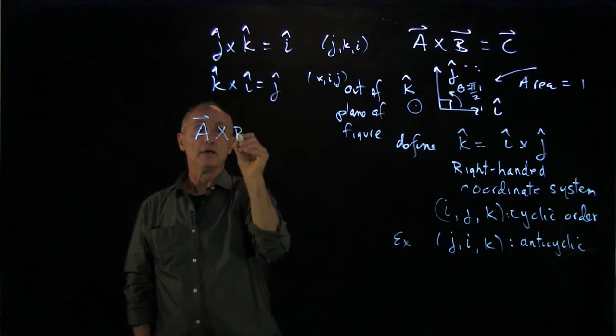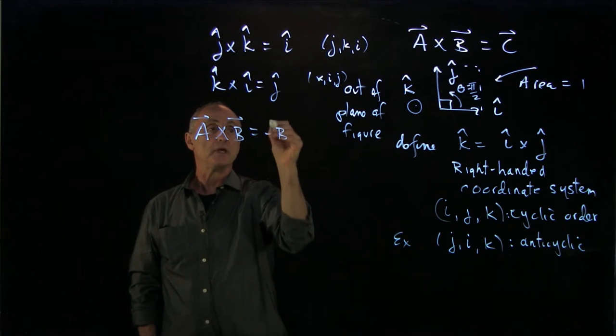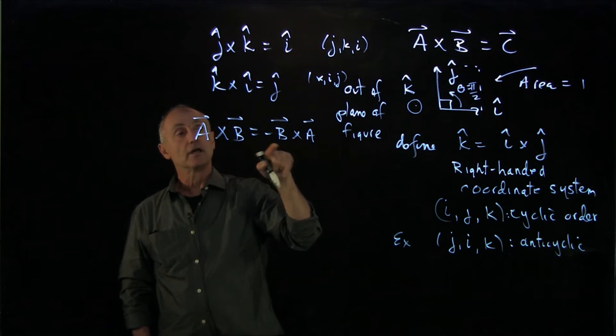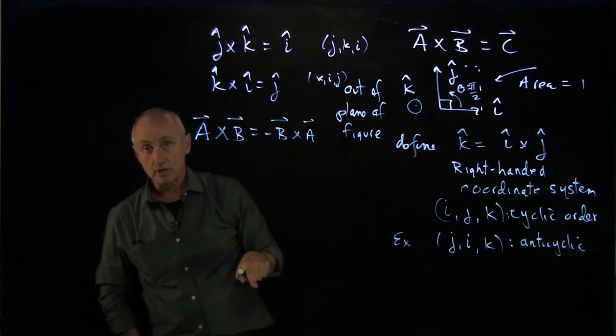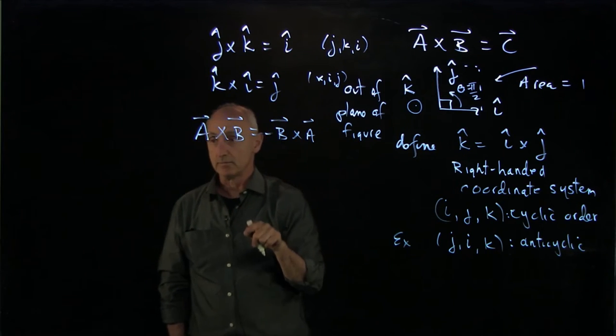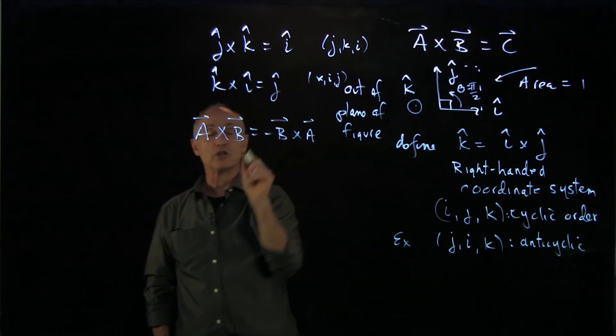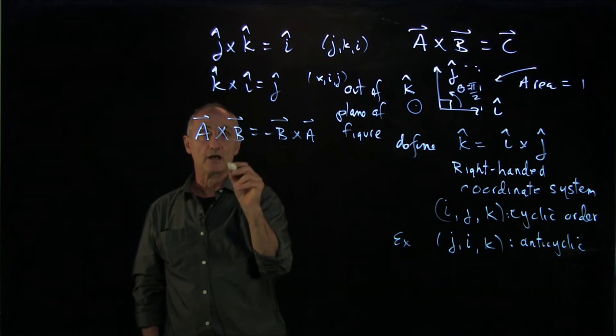But because of the way we defined a cross product in general, a cross b is minus b cross a. Because now you're using the opposite direction. So there's a minus sign. And therefore, any anti-cyclic permutation of these unit vectors, as an example,